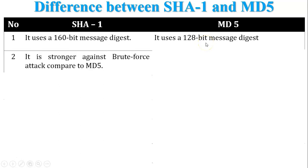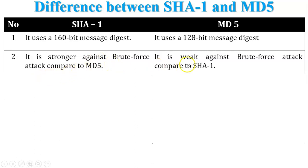The second difference is that SHA1 is stronger against brute force attacks compared to MD5. MD5 is weaker compared to SHA1 against brute force attacks.